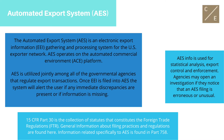Agencies may open an investigation if they notice that an AES filing is erroneous or unusual. The three regulatory agencies are OFAC, the Office of Foreign Asset Control under the Department of Treasury; BIS, the Bureau of Industry and Security under the Department of Commerce; and the Department of State. In certain situations, other agencies may be involved, such as the Department of Justice, for export violations that are considered criminal actions. 15 CFR Part 30 is the collection of statutes that constitutes the Foreign Trade Regulations, FTR. General information about filing practices and regulations are found here, and information related specifically to AES is found in Part 758.